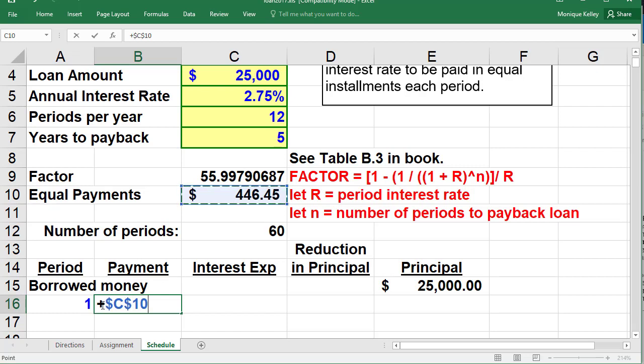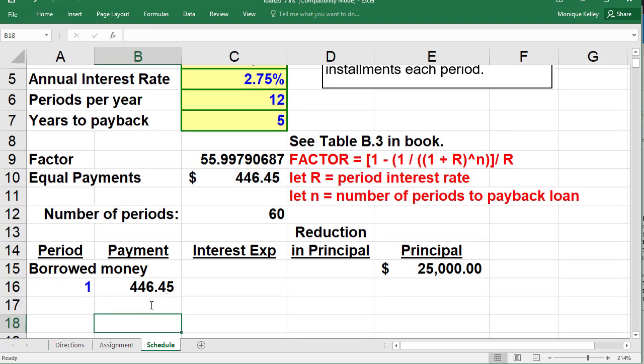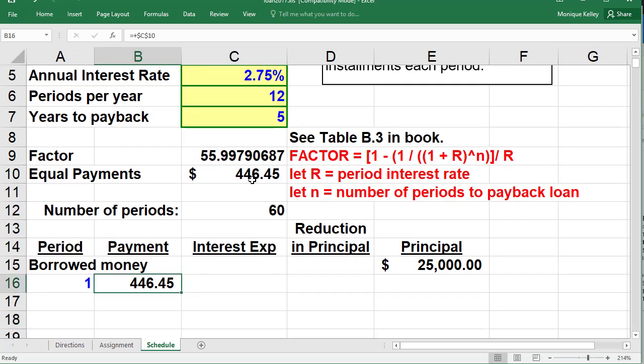And that will allow you to see these dollar signs in front of the letter C and the letter 10, which will basically mean that it will take the absolute value regardless of where you copy this formula and it will always reference the 10. So you want to make sure those dollar signs are in front of both the C and the 10. So if you keep pushing the F4, you'll see that the dollar signs change, but you want to see two dollar signs—one in front of the letter and one in front of the number. Go ahead and do enter, and that will put the number $446.45 in there.